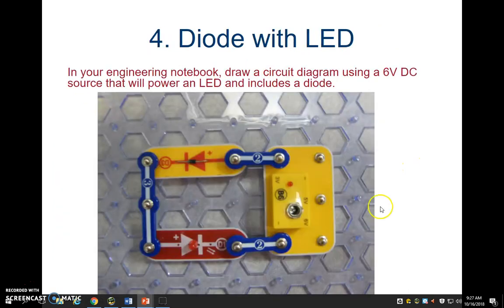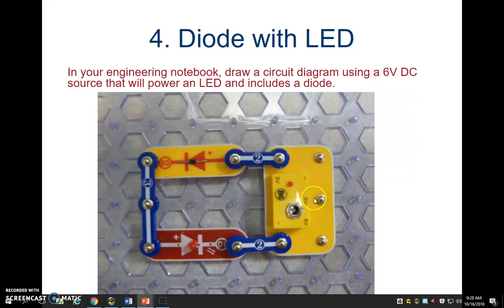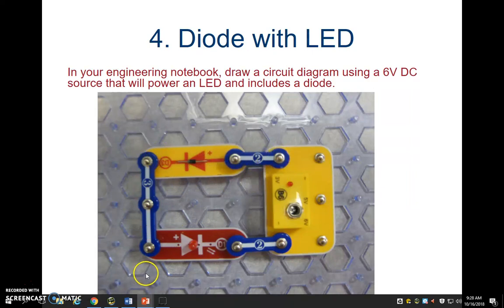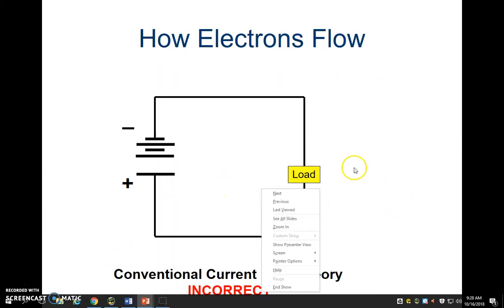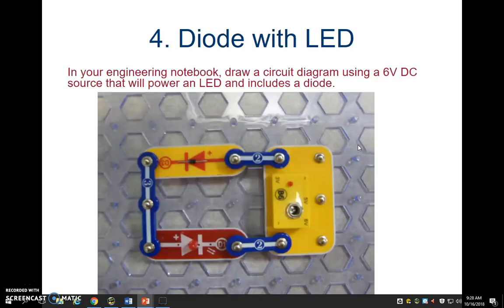Finally, our fourth circuit — write number four: diode with LED, nice and bold in your notebook. Let's draw this one in. We've got our battery over here on the right — draw your battery symbol. We've got a diode symbol, and on the bottom we've got an LED symbol — make sure it has the two arrows or it will just look like a normal diode. Last but not least, connect everything together with wire, and you've got your four circuits taken care of.